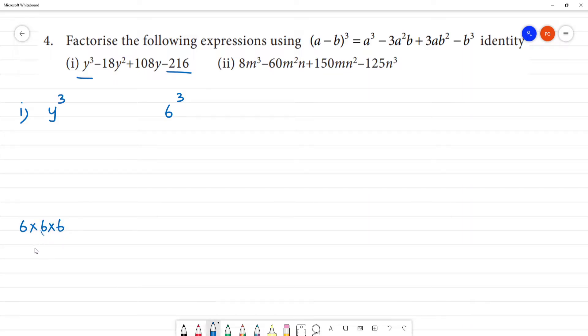6 times 6 is 36, 36 into 6 is 216. If we look at this, a is equal to what? A is equal to y. B is equal to what? 6.